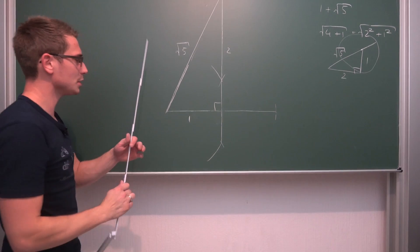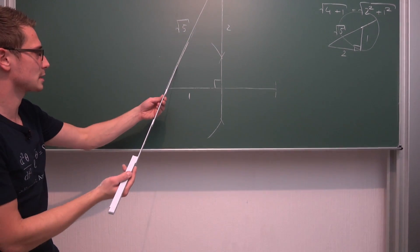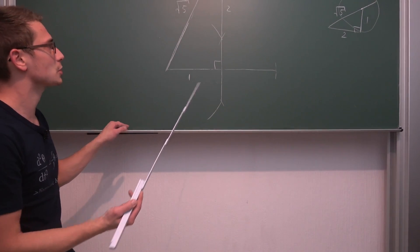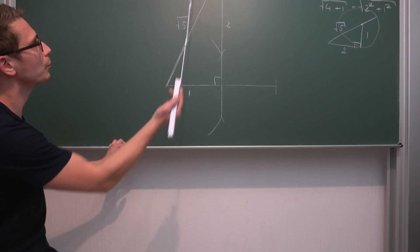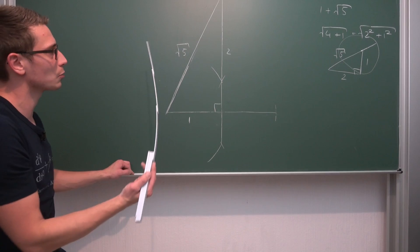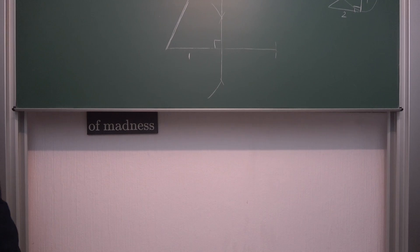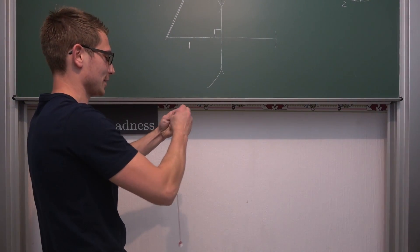Now the only 2 things left to do is to extend this line segment by 1 unit. Downwards just like we did before. Or upwards, but I can't go upwards really. And then we are going to bisect this 1 plus square root of 5 line. And then we are basically done. And it's that easy actually.